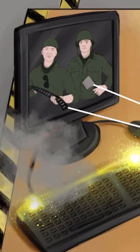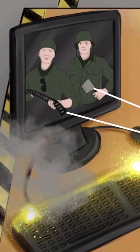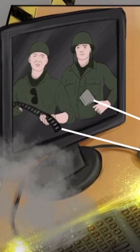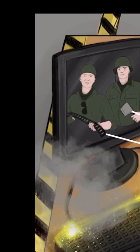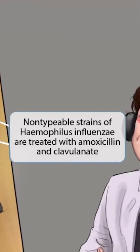Finally, as I just mentioned, James has been playing a lot of the video game Call of Duty, as you can see on his computer screen. If you look closely at the two characters on his screen, you can see that one is holding up an ammo belt, which is our symbol for amoxicillin, and the other is holding up a cleaver, which is our symbol for clavulanate. This is here to help you remember that non-typable strains of H-Flu can be treated with amoxicillin and clavulanate.